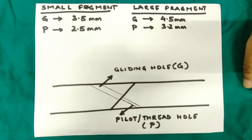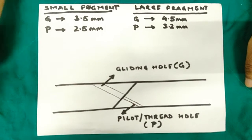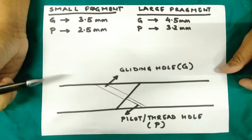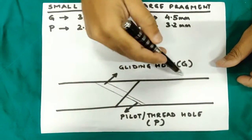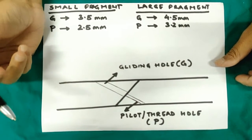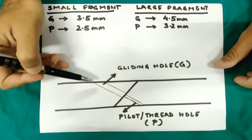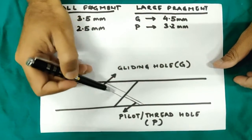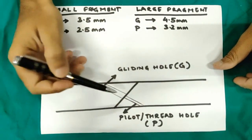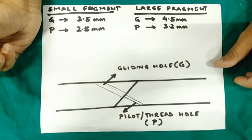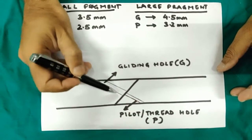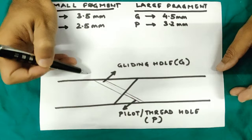Before I demonstrate how to do a lag screw, I would like you to focus on the basics of why and what the idea is behind doing the lag screw. I have drawn this bone — this is the fracture line. If you are applying a lag screw, the first important principle is that your screw should be perpendicular to the fracture. So if this is the fracture, your lag screw has to come absolutely perpendicular to the fracture line. When we talk about lag screw, we talk about the gliding hole — the first cortex is the gliding hole.